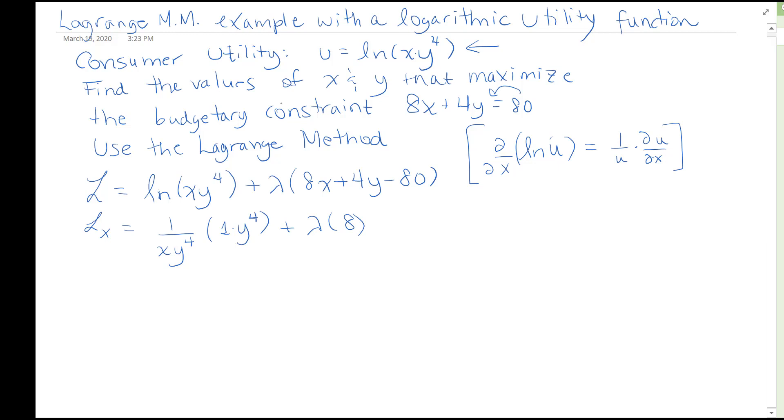And now the y to the 4s cancel. These guys right here. So we end up with 1 over x plus 8 lambda for our first derivative.